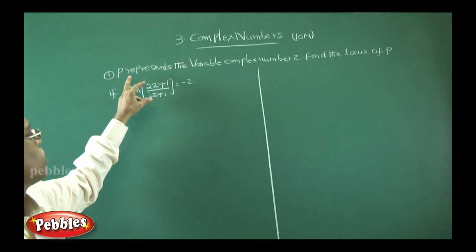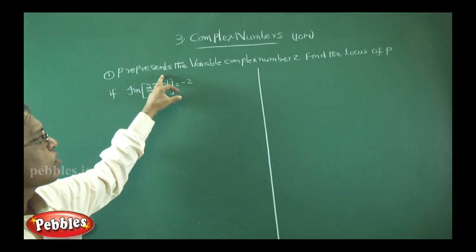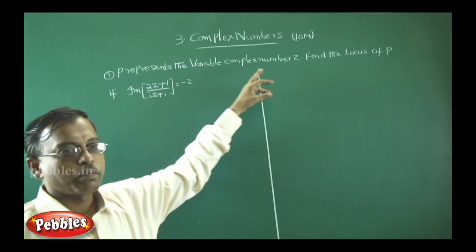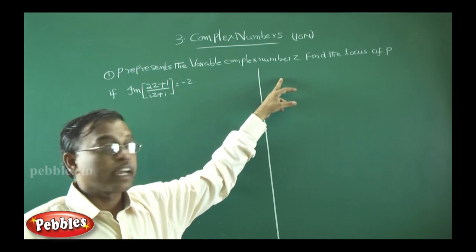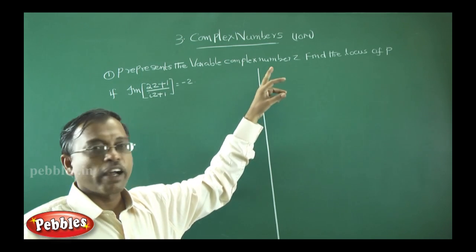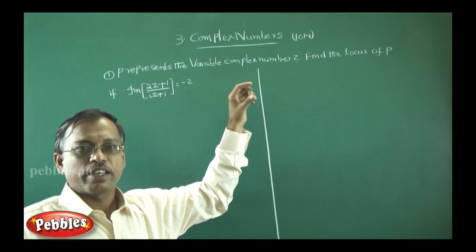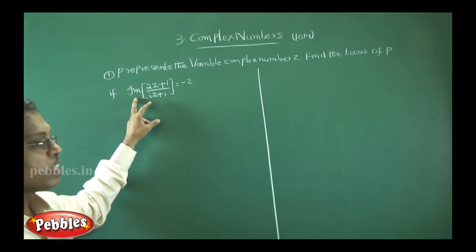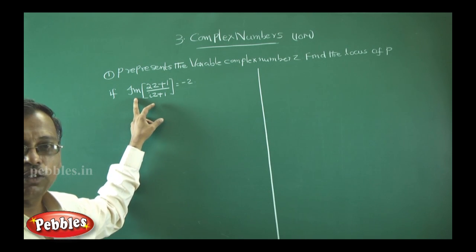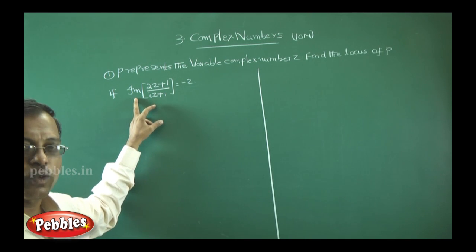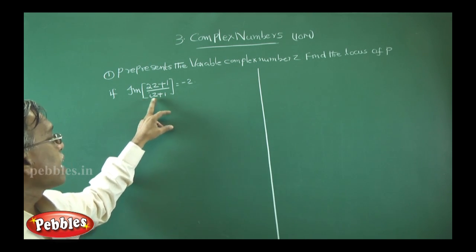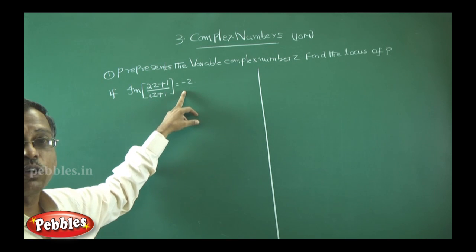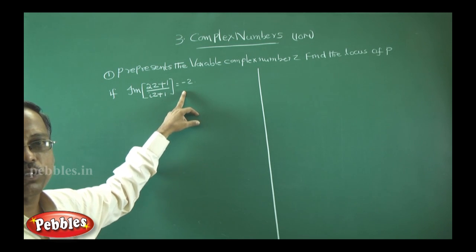The first problem: if P represents the variable complex number z, then find the locus of P, if the imaginary part of (2z + 1) / (iz + 1) is equal to minus 2.